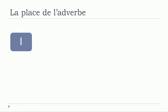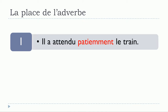We'll see only one sentence and the different possibilities. So here we get: il a attendu patiemment le train. We've got the verb attendre — attendre means 'to wait' — and this is the passé composé form. First you've got avoir at the present tense, and then this form is the participe passé.